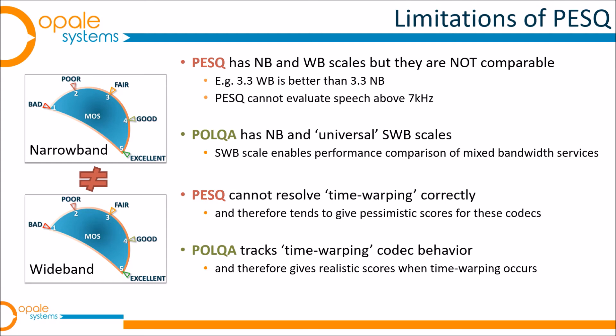To summarise the two key benefits of POLQA over PESQ: first, the universal super wideband scale — soon to be universal full band scale — which enables valid comparison of signals across all speech bandwidths from narrowband through wideband, super wideband, and potentially full band. Second, POLQA is able to track time warping codec behaviour. These are the two characteristics that make POLQA a necessary replacement for PESQ in some applications.